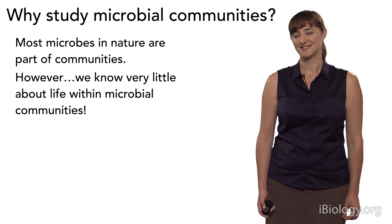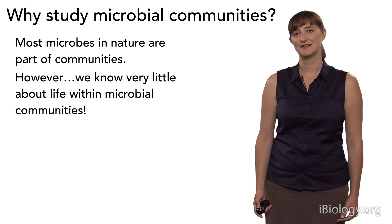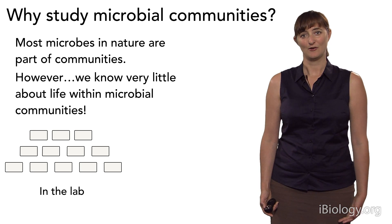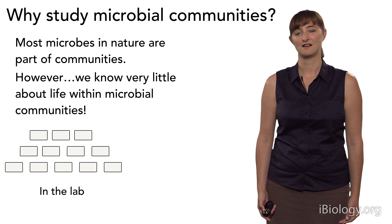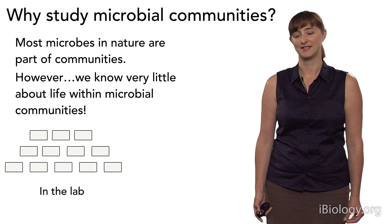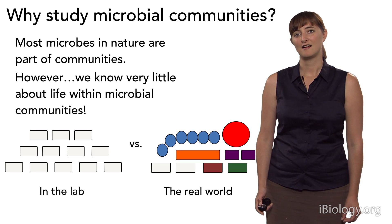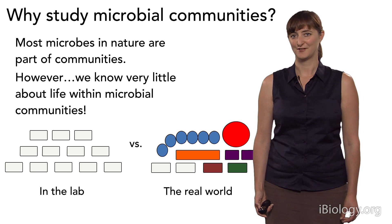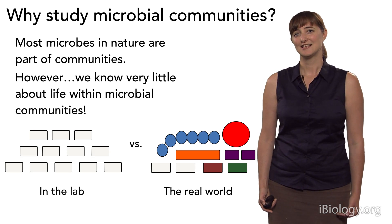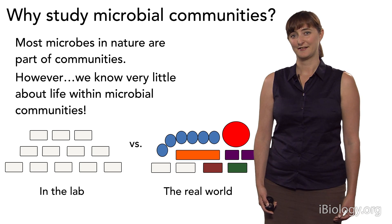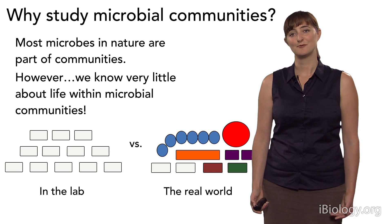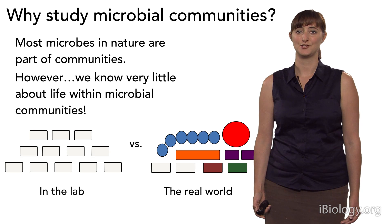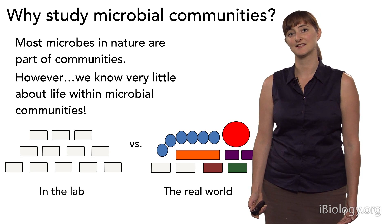Often as a microbiologist, what we'll study is an organism in isolation in the lab — for example, E. coli growing as a population of cells individually. However, in the real world what we have are these communities of different species living together. That's not to say one approach is better, just that we can get at different types of biological questions under these two different types of systems.